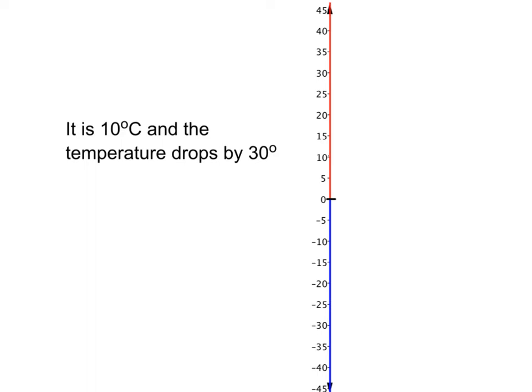Let's look at an example. If it is 10 degrees centigrade and the temperature drops by 30 degrees, what temperature will we end up at? We know that we're starting here at 10 degrees and we need to come down by 30. Now we could slowly count down 30 individual little steps but that's actually going to take us quite a long time, so let's see if we can be more efficient about it.